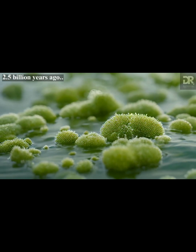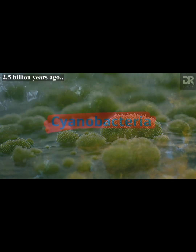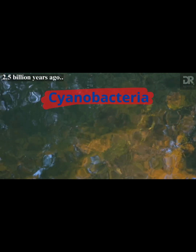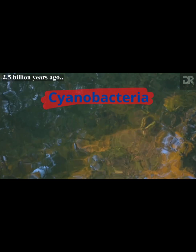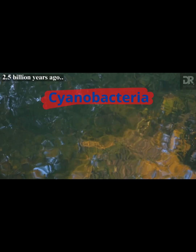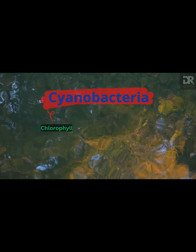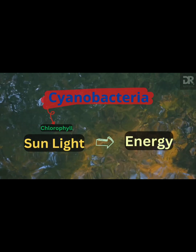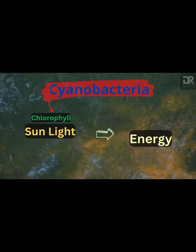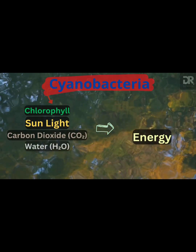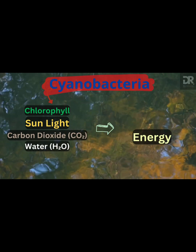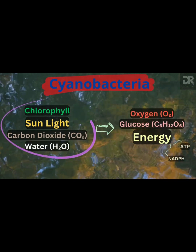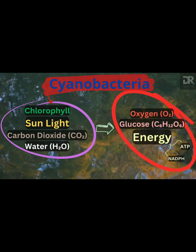Over 2.5 billion years ago, cyanobacteria developed the ability to photosynthesize after the evolution of chlorophyll, which converts sunlight into energy in the presence of carbon dioxide and water, releasing oxygen and food as a byproduct.